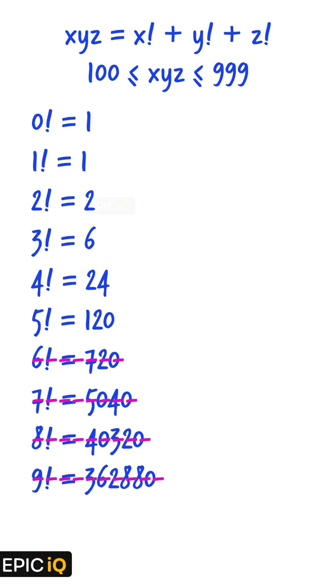Now, let us visit the list of factorials again. The factorials of 0, 1, 2, 3, and 4 are quite small. If we add the factorials of 2, 3, and 4, we get 32.